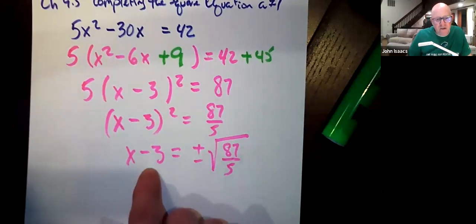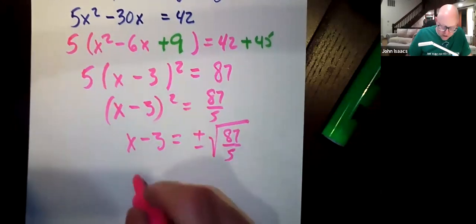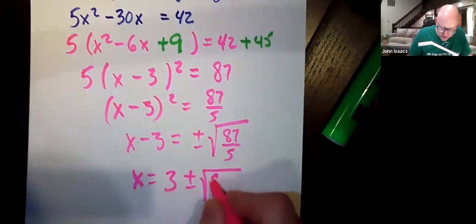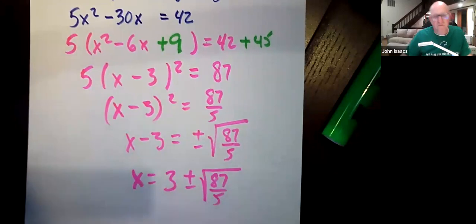Alright, and then to actually get to x, we need to add 3. So x becomes equal to 3 plus or minus the square root of 87 over 5, and we're done with that problem, and there we go.